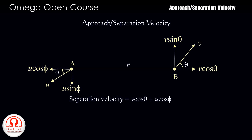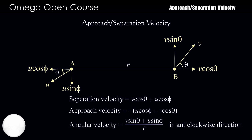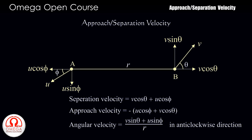Alternatively, the rate at which they are approaching each other is minus U cos phi plus V cos theta. In this case, the tangential speed of B with respect to A is V sin theta plus U sin phi, and hence the angular speed of B with respect to A is (V sin theta plus U sin phi) divided by R, in the anti-clockwise direction.